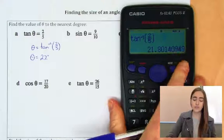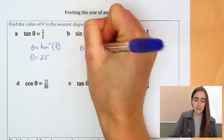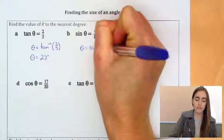All right, for our second one, we've got sine theta equals 9 over 10. That means that theta is going to be equal to sine inverse of that whole fraction in brackets.